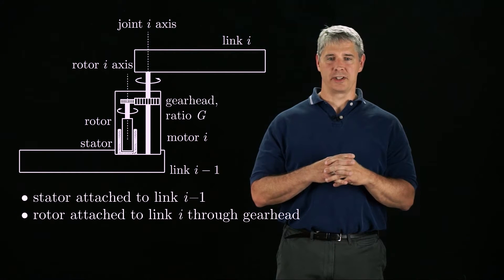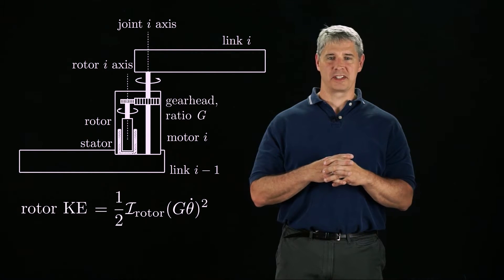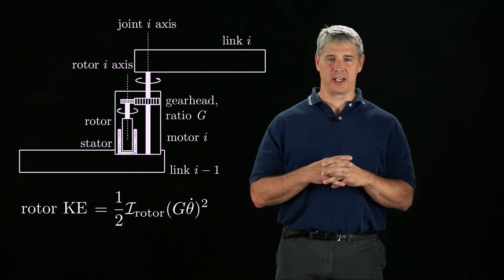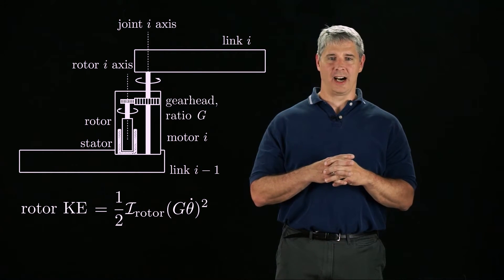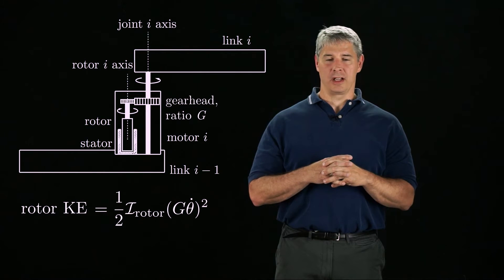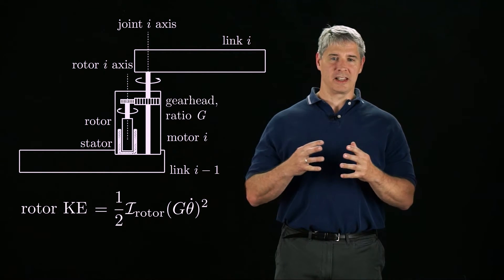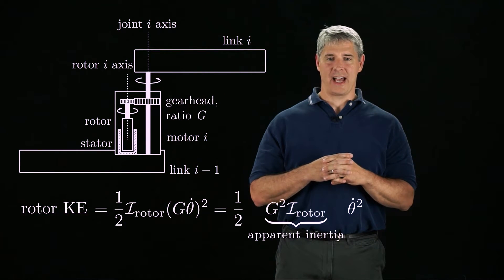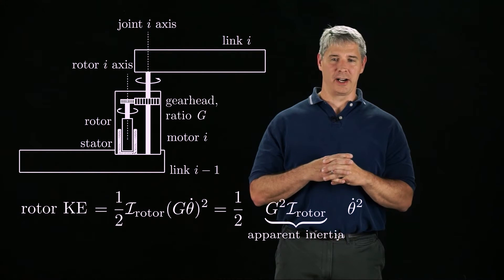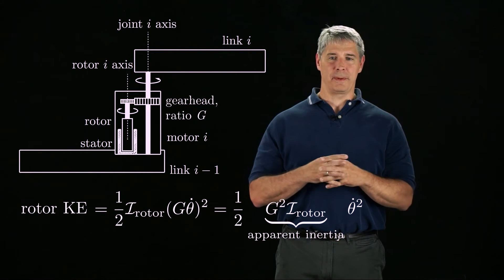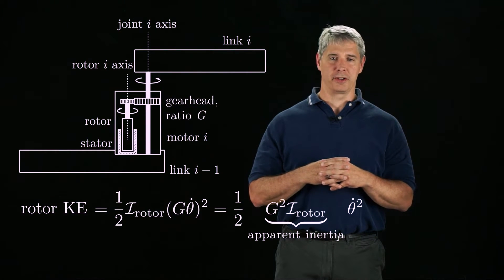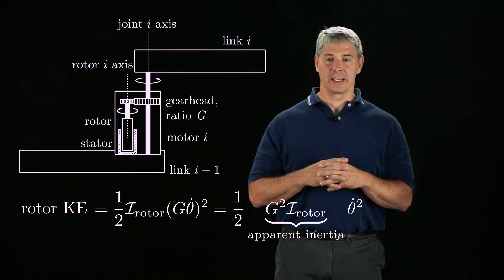To see this, we can calculate the kinetic energy of the rotor as one-half the scalar inertia of the rotor about its rotational axis times the square of G theta dot, where theta dot is the joint velocity. This means that the apparent inertia of the rotor about its axis is G squared times I rotor. This is called the apparent inertia, since someone manually moving joint i would feel this apparent rotor inertia in addition to the inertia of the link.